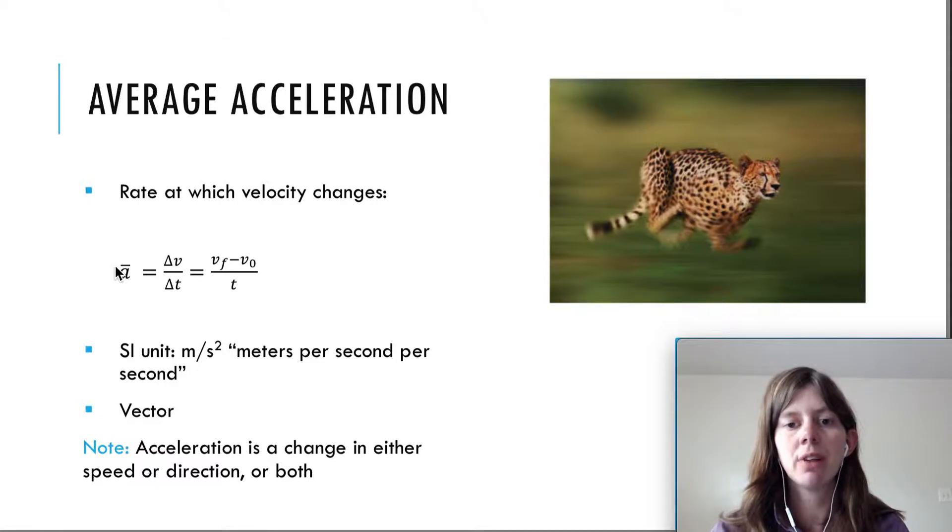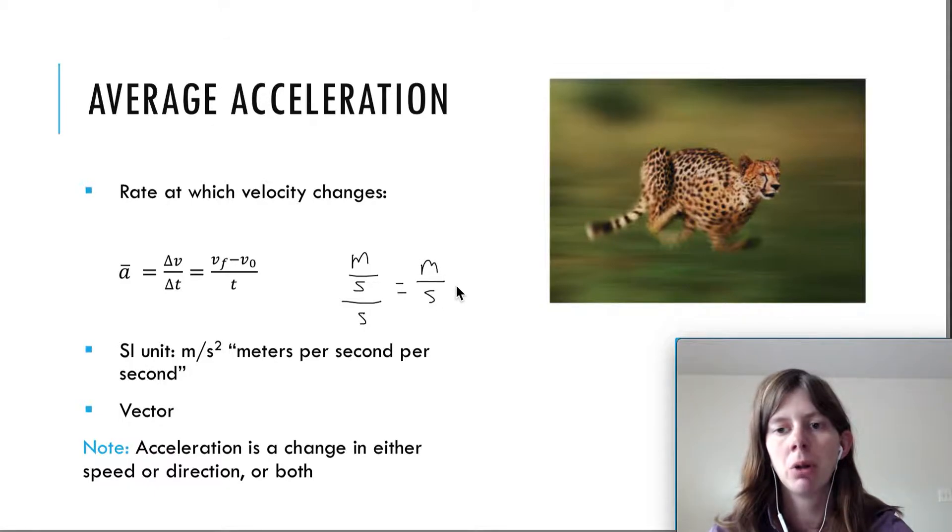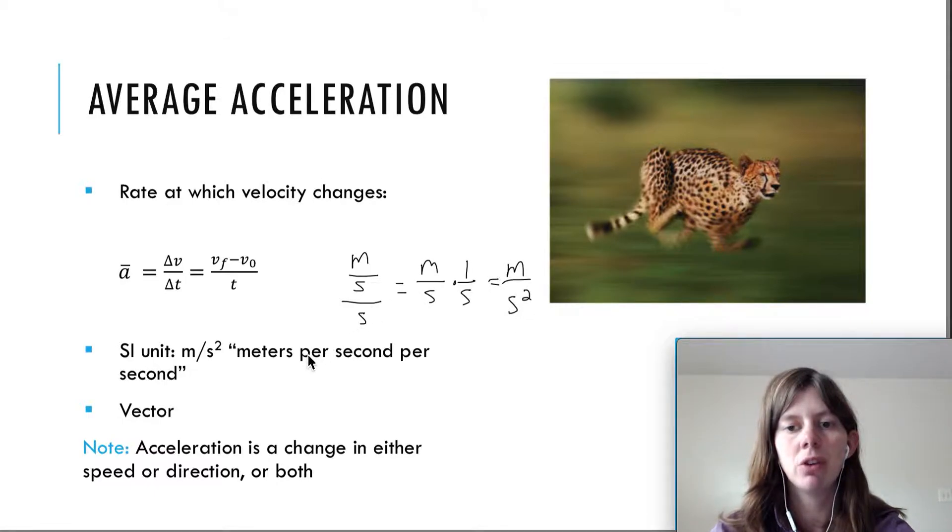The units for acceleration is meters per second squared. This comes from doing meters per second divided by seconds. Where you can multiply by the reciprocal when you divide by seconds here. And you can see this gives you meters per second squared. But I like to think of this unit as meters per second per second. How many meters per second do you change every second? It's just another way to remember the definition here.